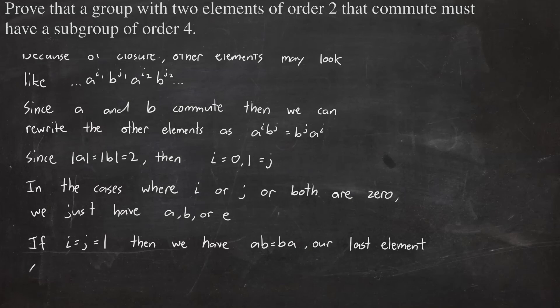So this means that h is comprised entirely of e, a, b, and ab, which is 4 elements, so h has an order of 4.